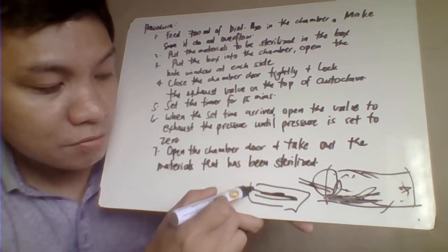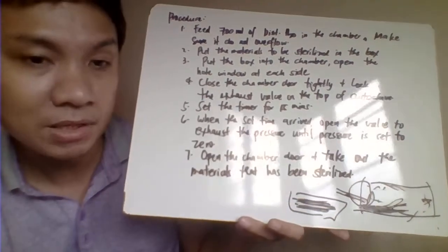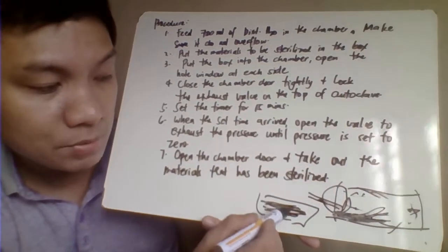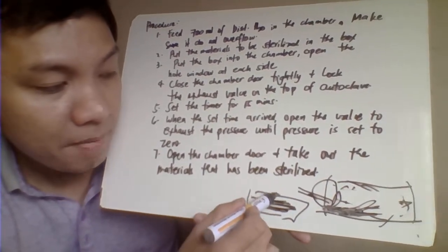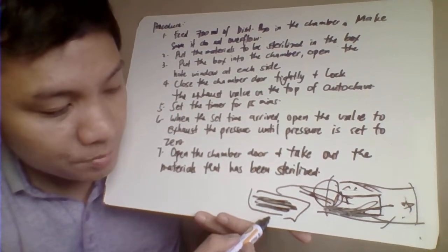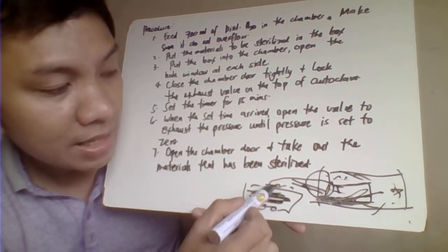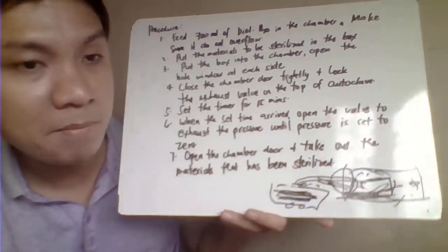After that, take your box and fill it with all your materials to be autoclaved. Place them in there, then put your box within your chamber. Close it first—there are closures on the side—close those, and then put this within your chamber.